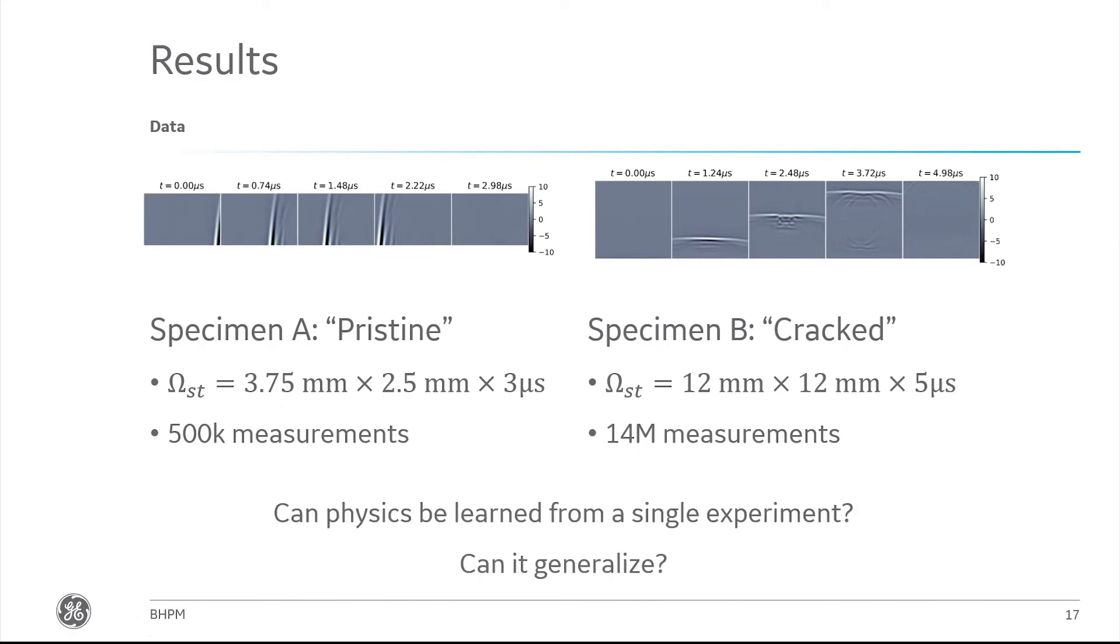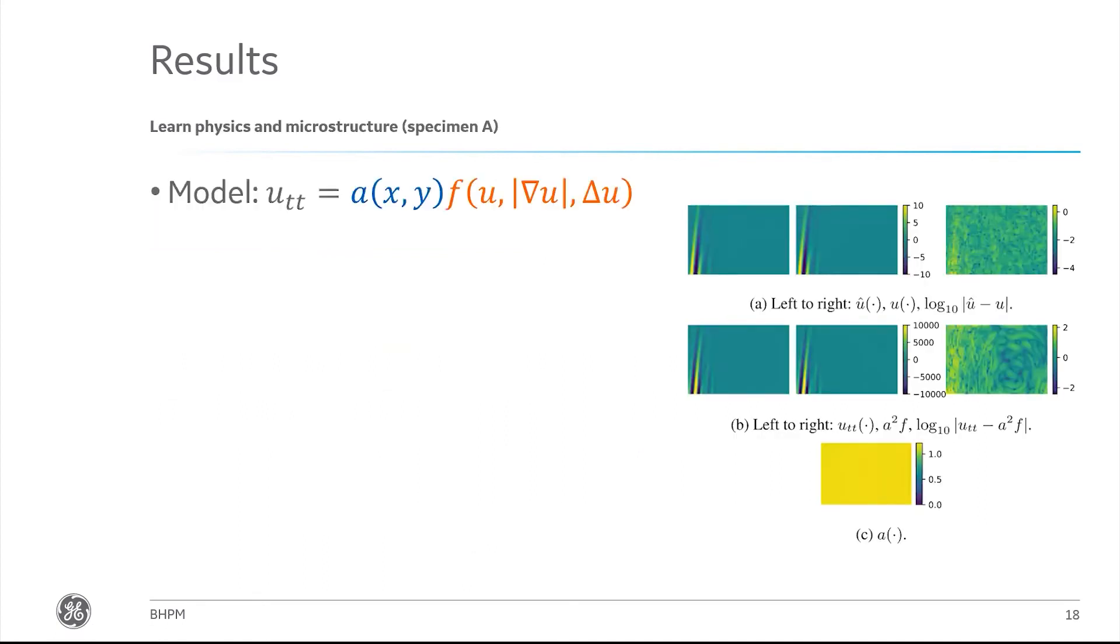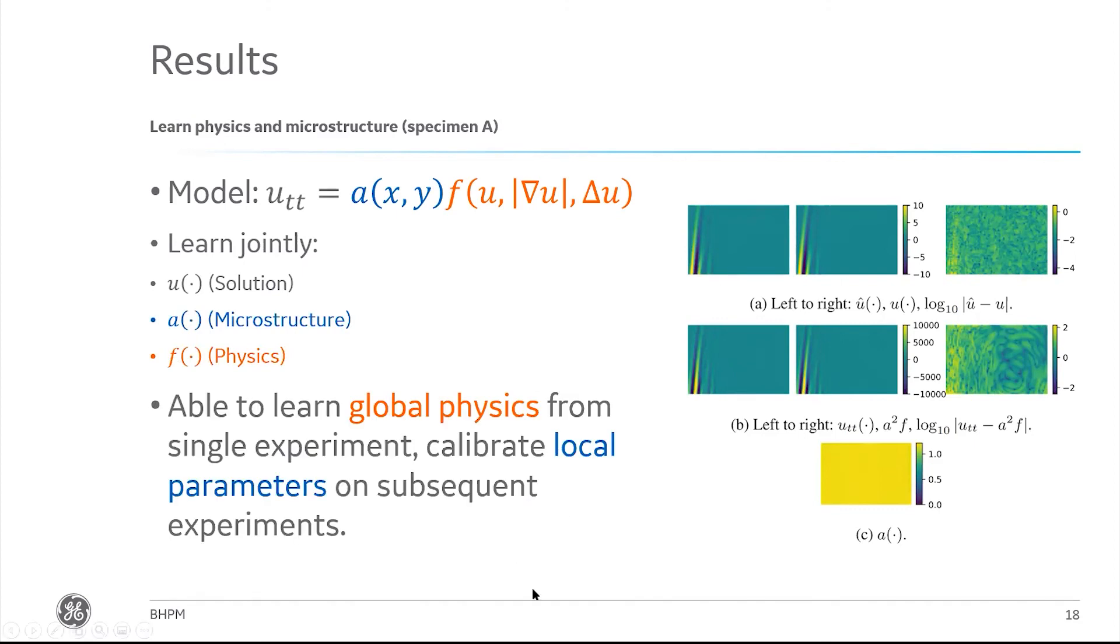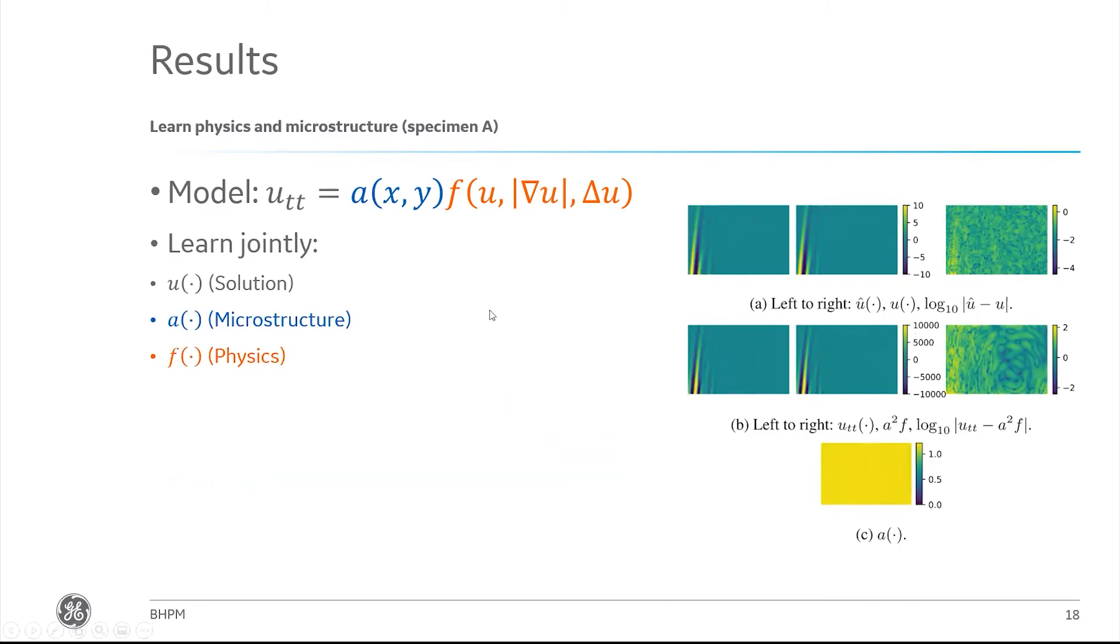We want to know if we can learn physics from a single experiment and whether it can generalize. The answer turns out to be yes. We take this model that we wrote, we learn jointly using the pristine specimen, its solution, its microstructure, as well as this global physics F. We can see that when we compare the observations to what we've got, there's good agreement. At the bottom here is our estimation of this parameter which is learned jointly with the physics. We see that we think this material is indeed quite homogeneous, which matches our expectations.